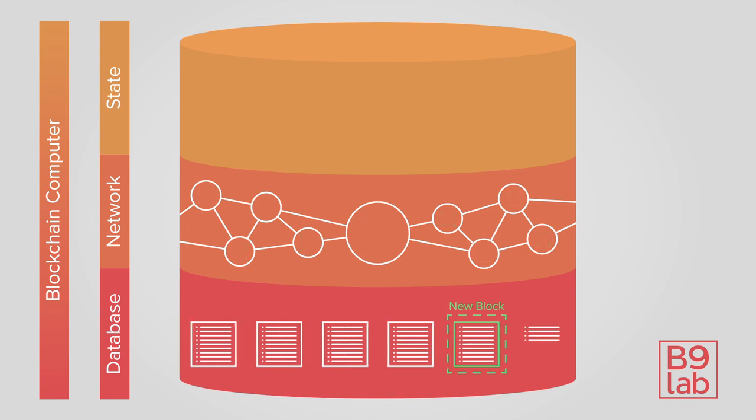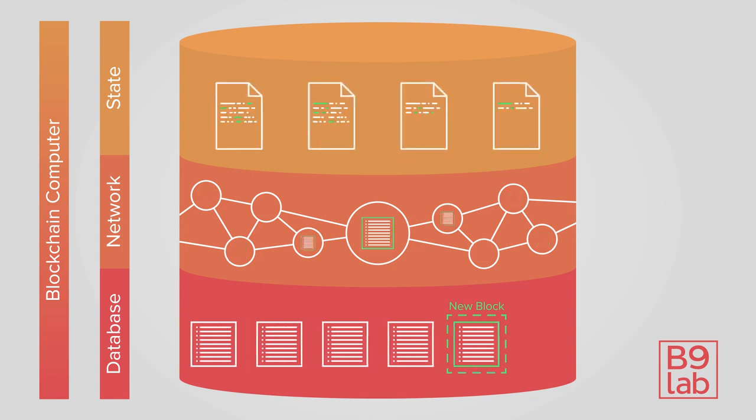The blockchain computer becomes possible if we think of every new block as an update to the state of this virtual network computer. Transactions can contain computational steps that influence or create new smart contracts. Smart contracts are our gateway to interact with a list of transactions that are associated with it and form its state.